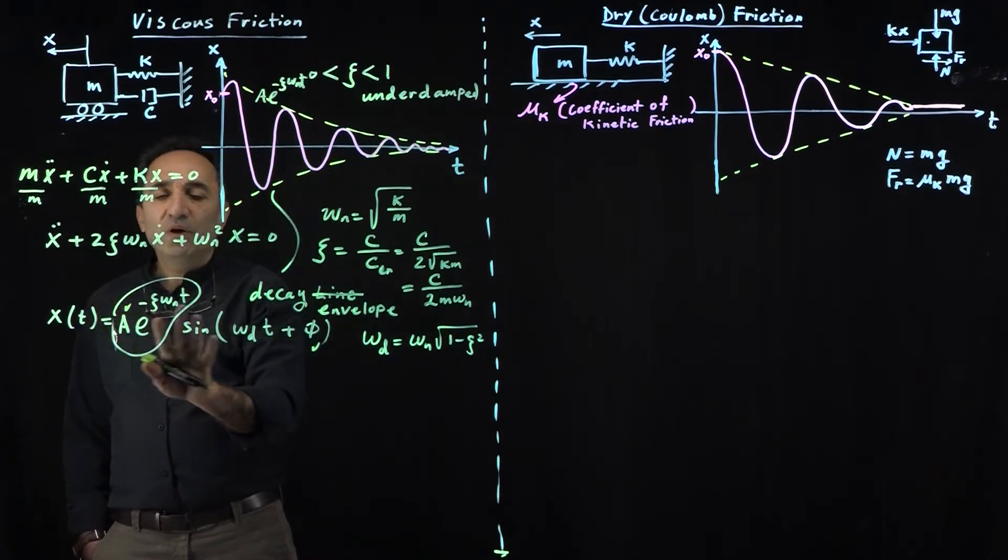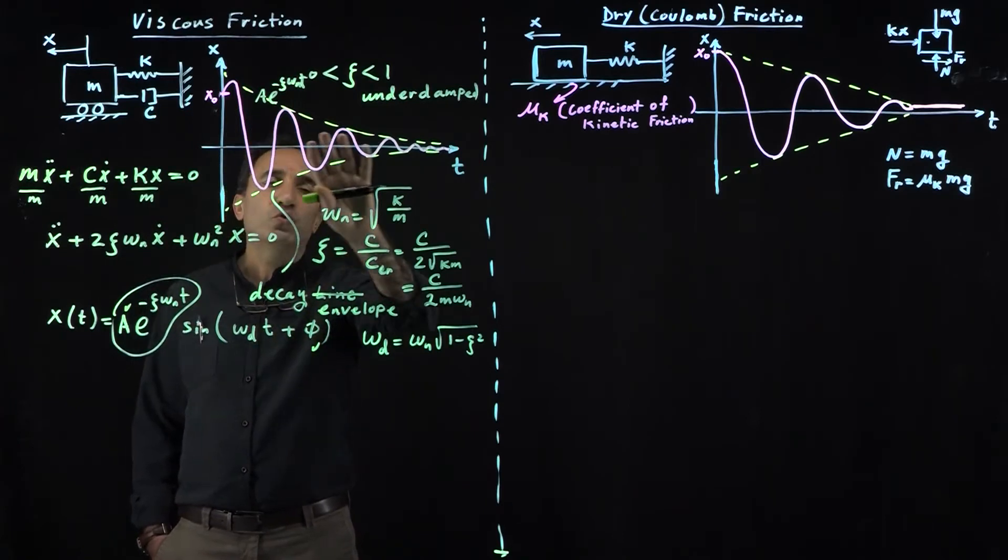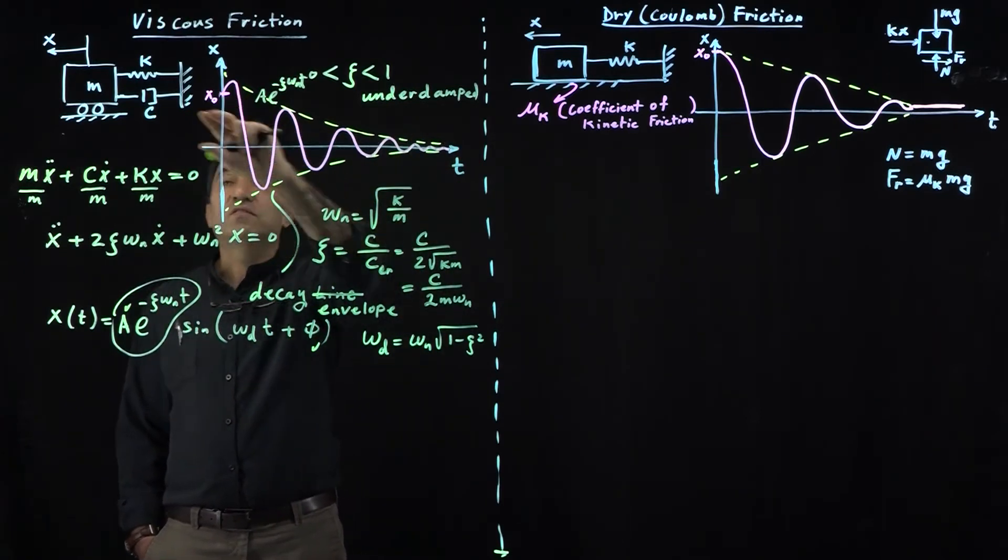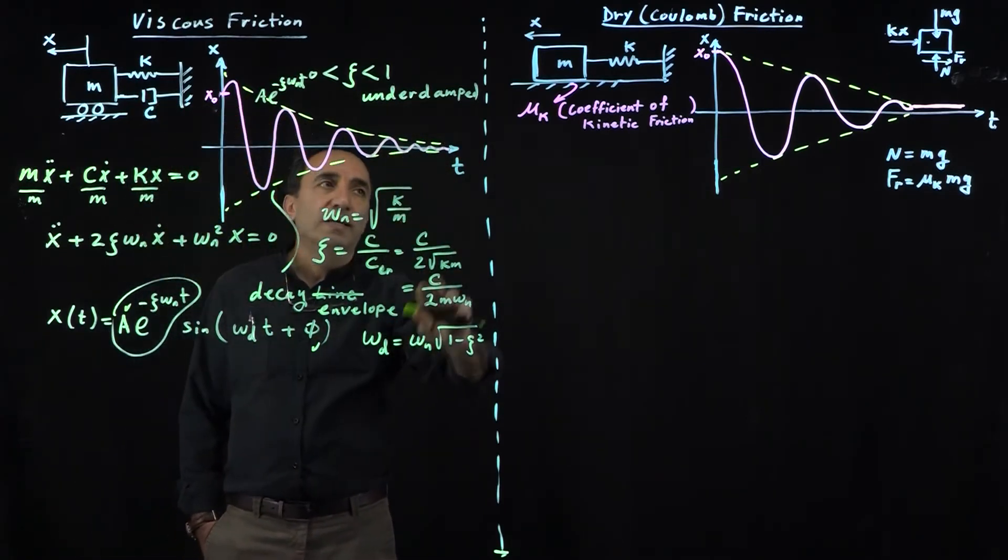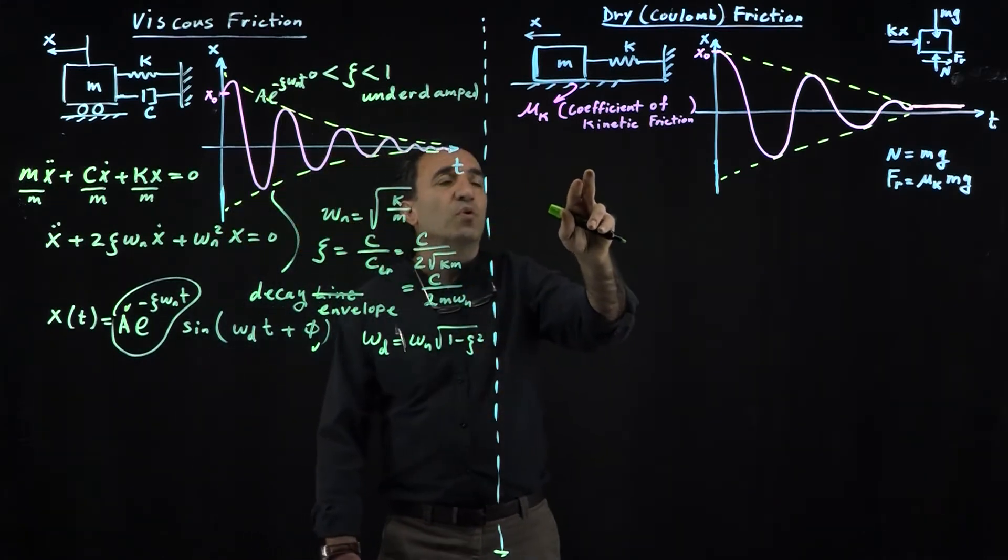My goal is not to show you how A and phi are determined. I just wanted to show you how this system will respond and make a comparison with this system.